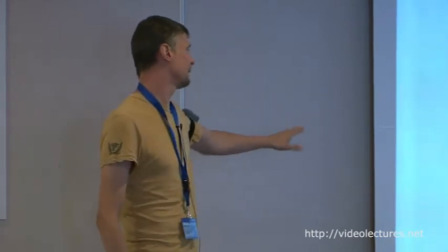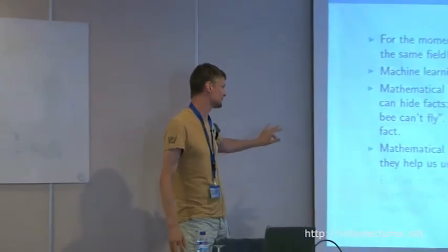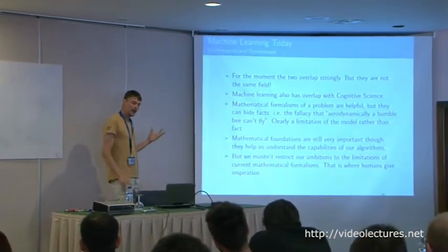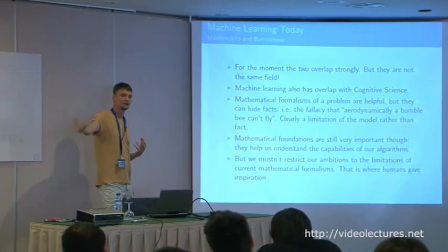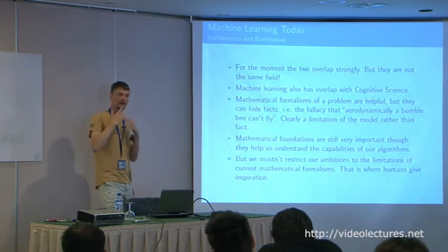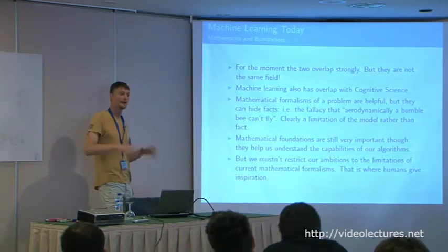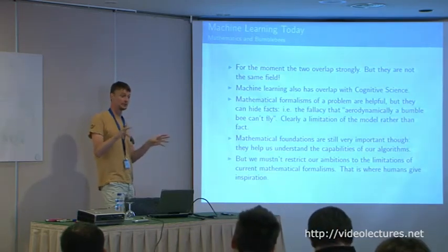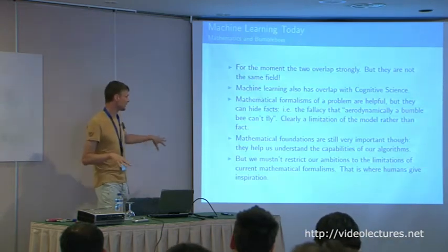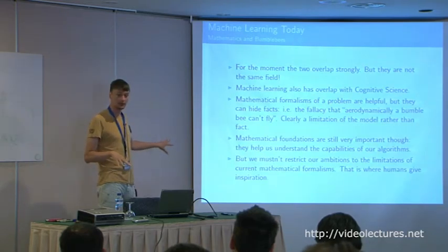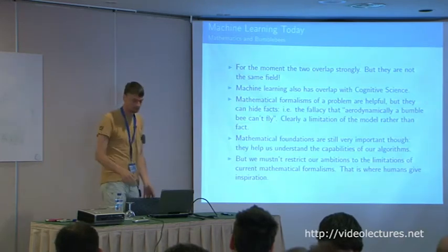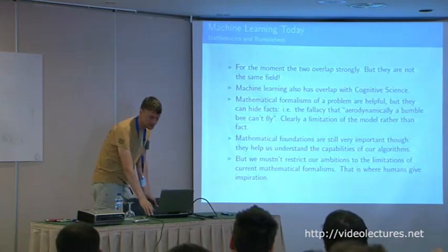Mathematical foundations are still really important because they help us understand the capabilities of our algorithms. But machine learning is very good at going out empirically and saying: look at this result — I've created this deep hierarchy of Boltzmann machines and I can get this kind of result, even though I can't prove much about convergence. We mustn't restrict our ambitions to the limitations of current mathematical formalisms.